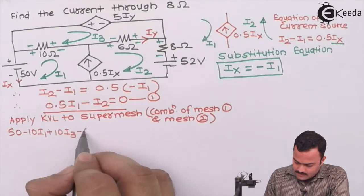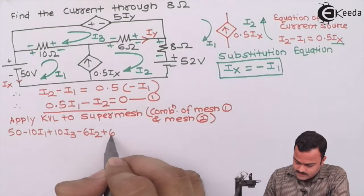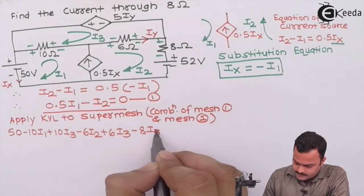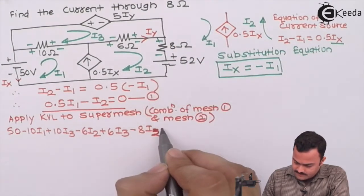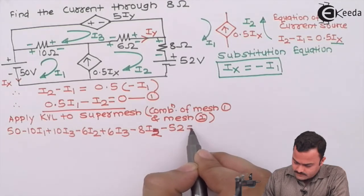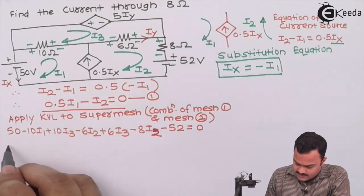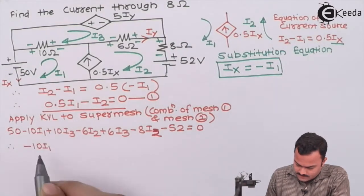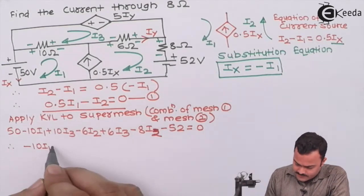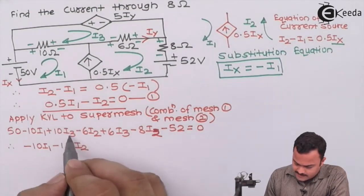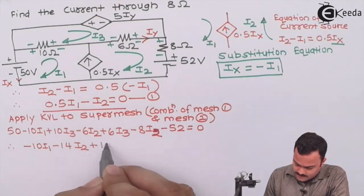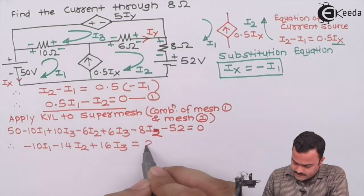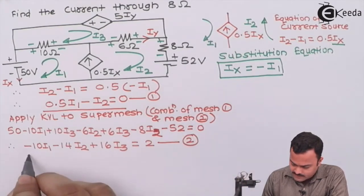Continuing past the current source: minus 6 I2, plus 6 I3, minus 8 I3, minus 8 I2, minus 52 equals 0. Simplifying: minus 10 I1; for I2, minus 6 I2 minus 8 I2 gives minus 14 I2; for I3, 10 I3 plus 6 I3 gives 16 I3; and 50 minus 52 gives minus 2, which moves to the right side as plus 2. This is Equation 2.